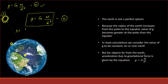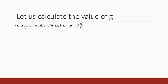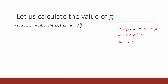Now let's calculate the value of g. We already know the required values: the gravitational constant G = 6.7 × 10⁻¹¹ N·m²/kg², the mass of the earth M = 6 × 10²⁴ kg, and the radius of the earth r = 6.4 × 10⁶ m.